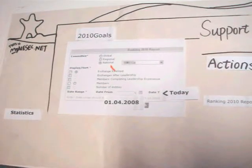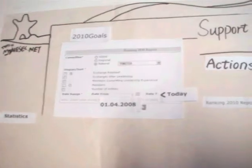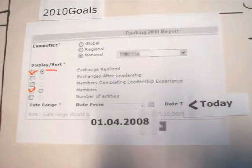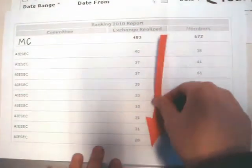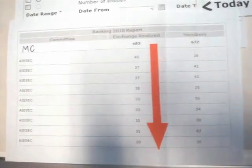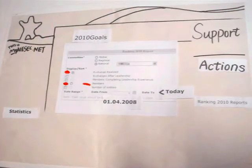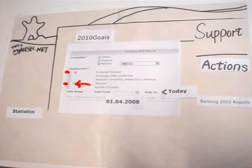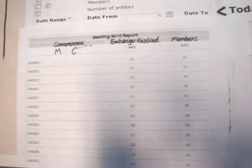For example, I select 1MC and select the number of exchanges realized and the number of members. I'm going to sort by number of exchanges so that you can see the LC ranking by the number of exchanges. But if I select the same goal but sort by number of members, you can see the LC ranking by number of members.